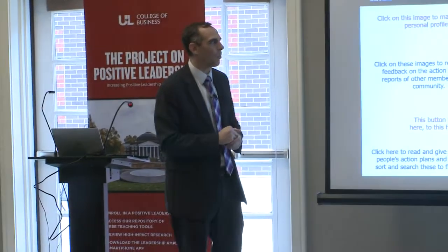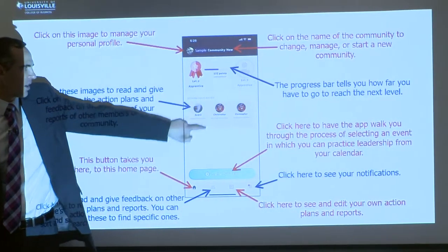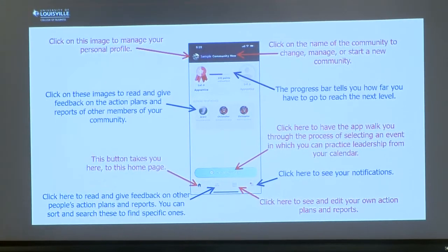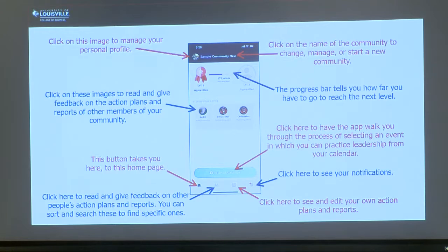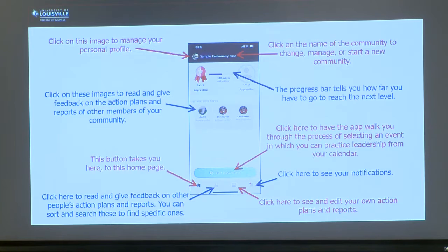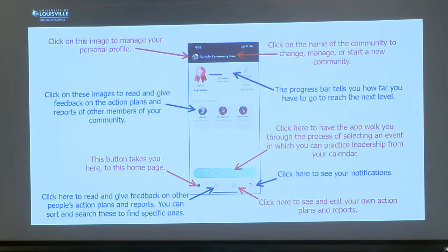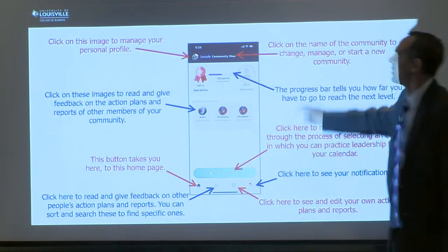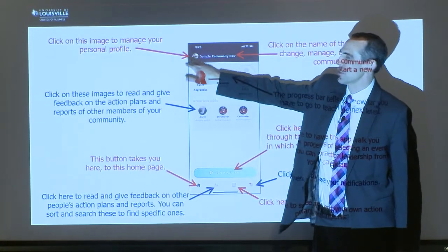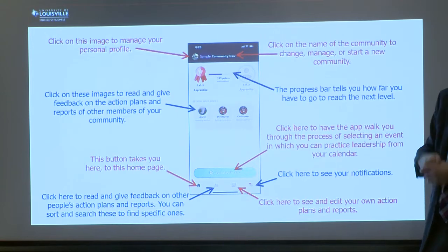The home page shows little rectangles which are the plans that people have submitted that they are practicing their leadership with. You can click on those and give feedback or get ideas from other people's plans. The green button on the bottom is how you start your own plan. There are menus to navigate at the bottom so you can look at the community's plans, manage your own plans, or look at notifications. There are point systems and levels you can earn in an attempt to gamify the process.